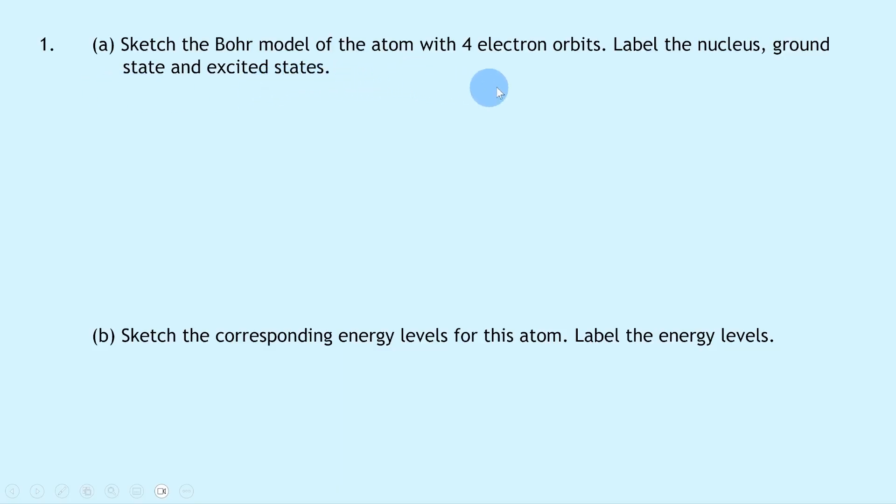So let's get started. Question 1a says sketch the Bohr model of the atom with four electron orbits. Label the nucleus, ground state, and excited states. If we sketch the Bohr model with circular orbits, it should look something like this where we've got the positively charged nucleus in the middle.